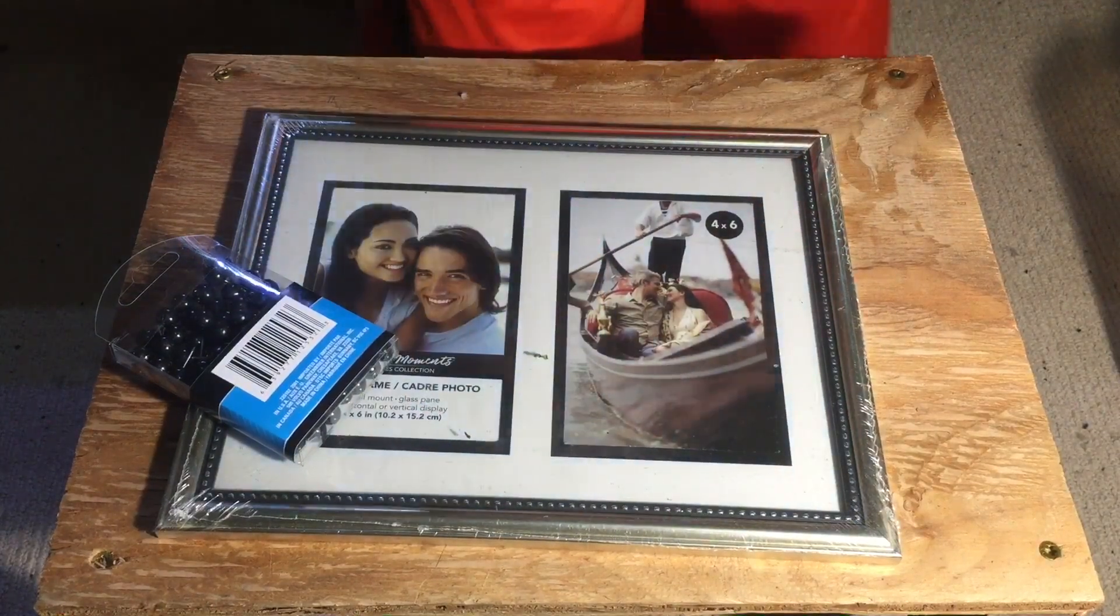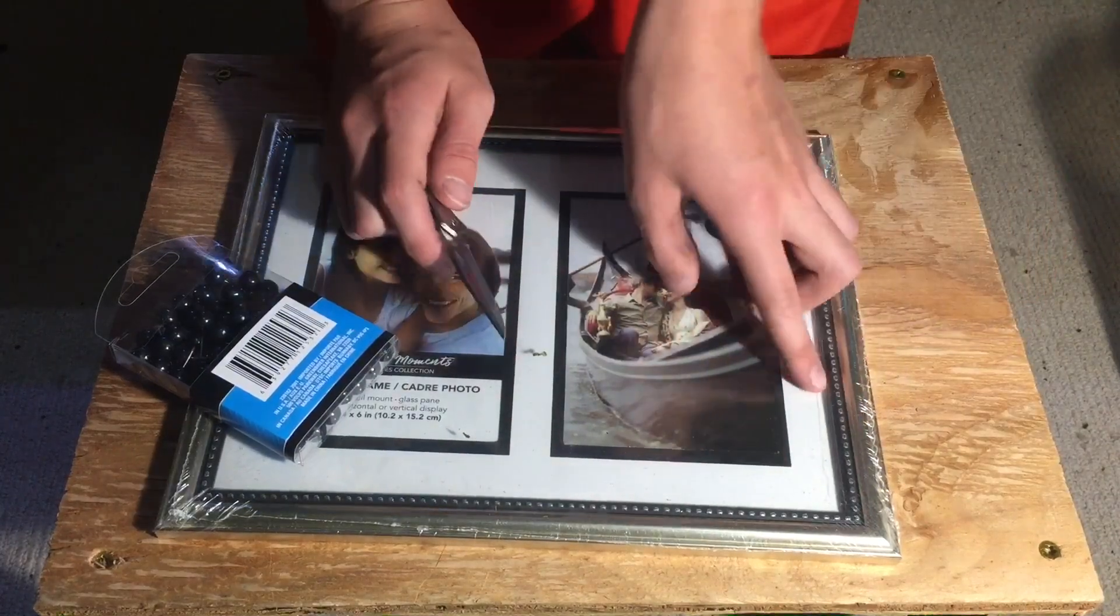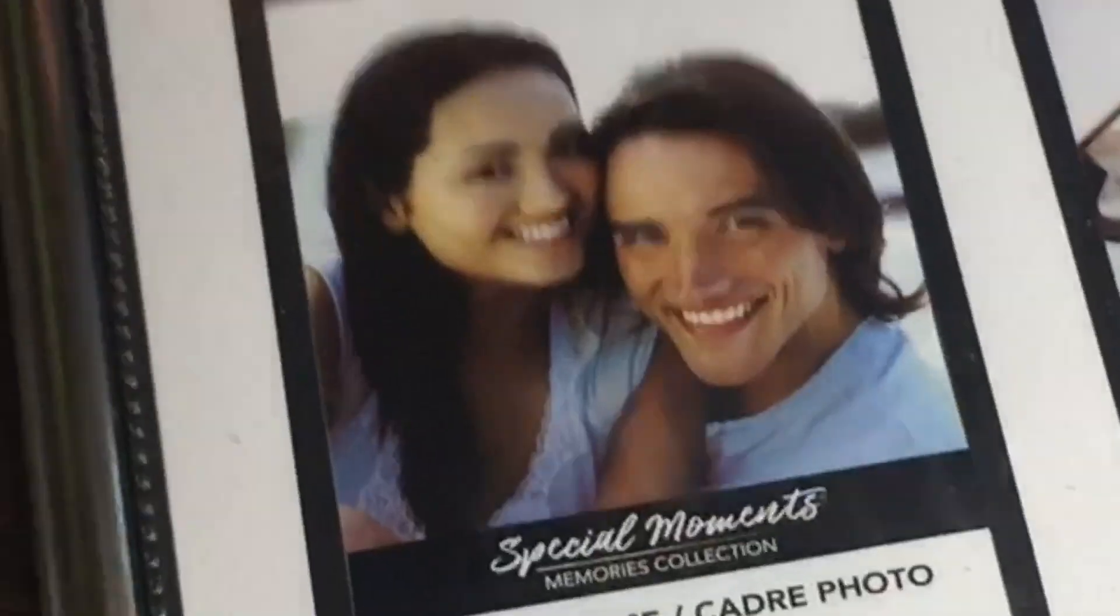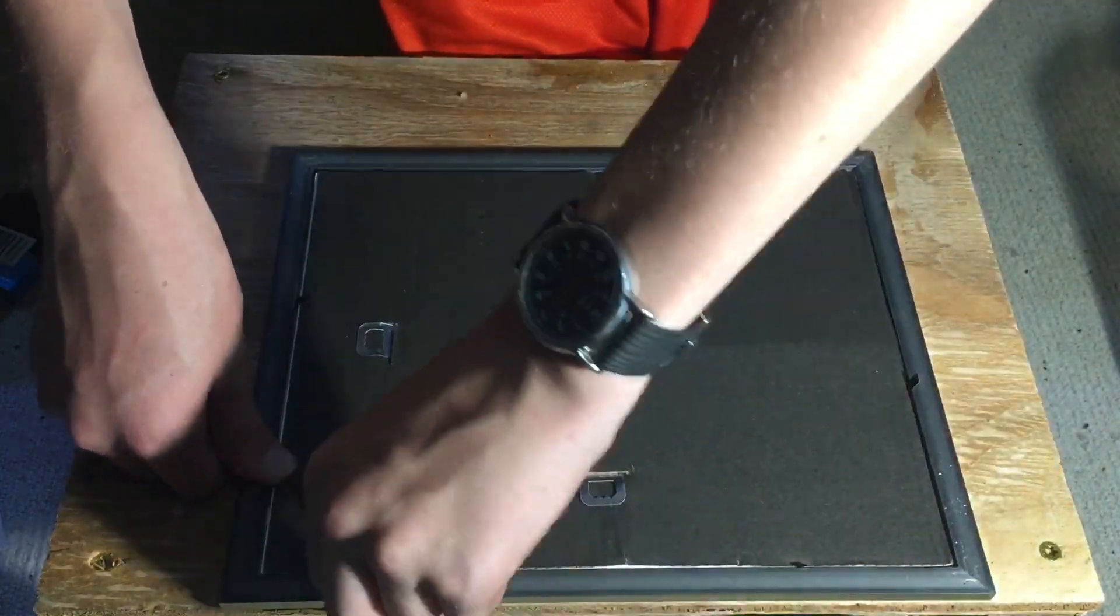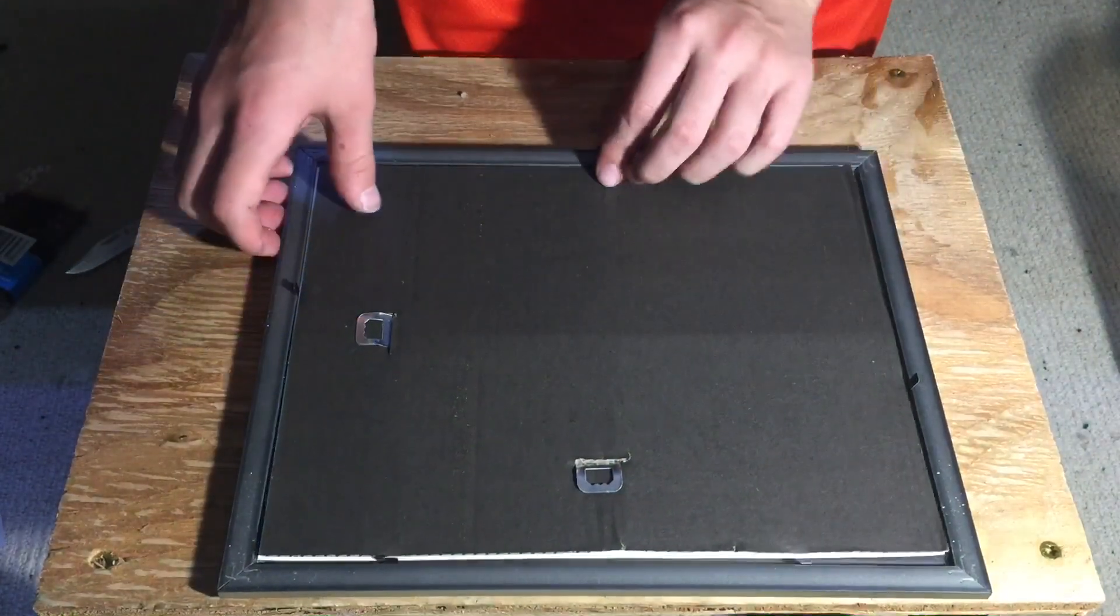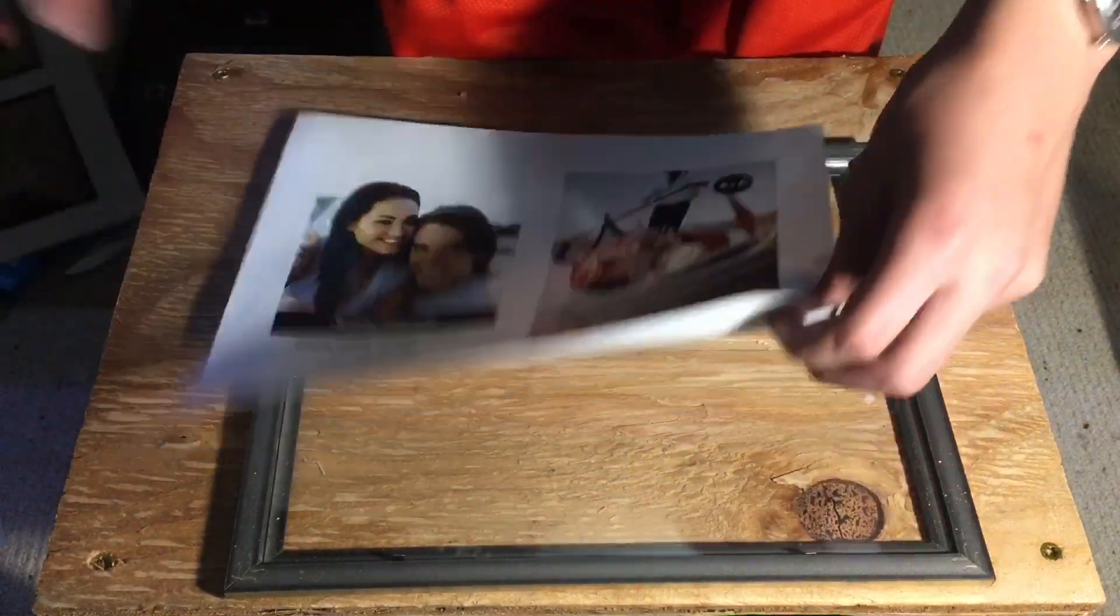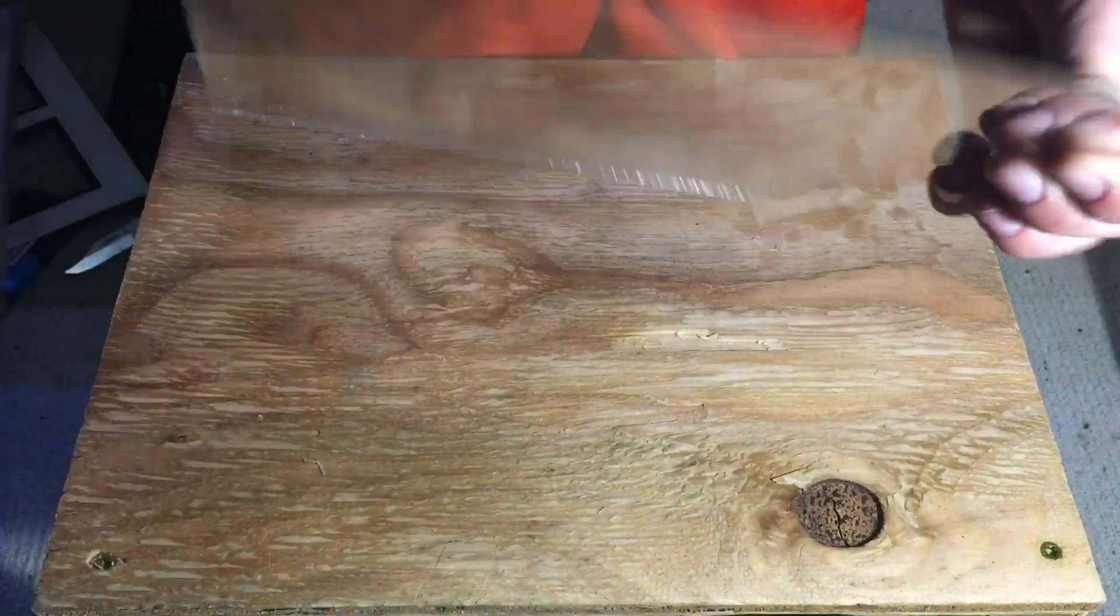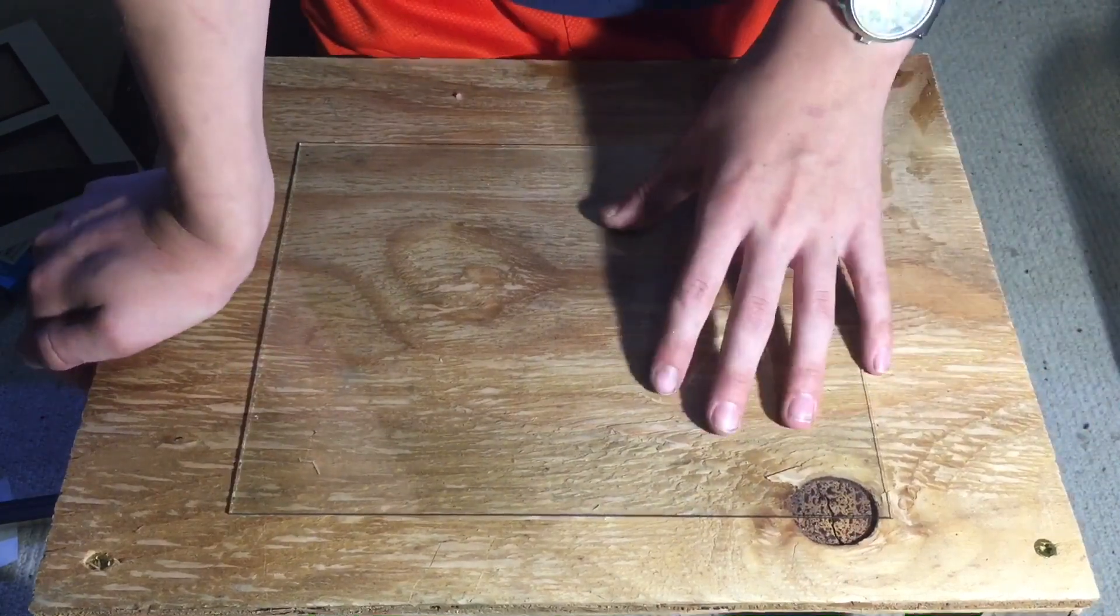We're going to start off by cracking open this picture frame. If I'm not mistaken, this should be a glass frame. Got these very nice generic pictures. Then flip this over and move these guys out. All we want pretty much out of this is the piece of glass that it comes with. If you're that kind of person, you can have these two beautiful pictures of random people on your wall. That's a bonus. Then we've got a very thin pane of glass. What you could use this for is a lid for an aquarium.